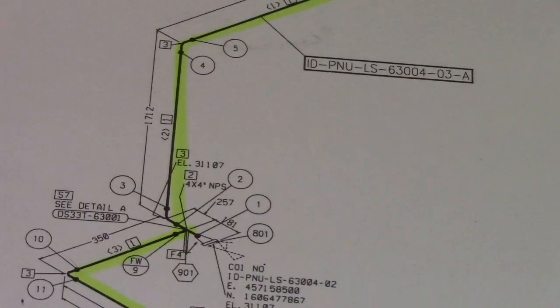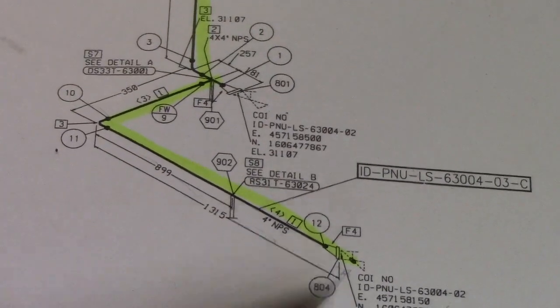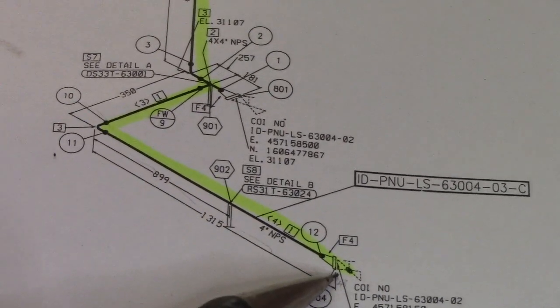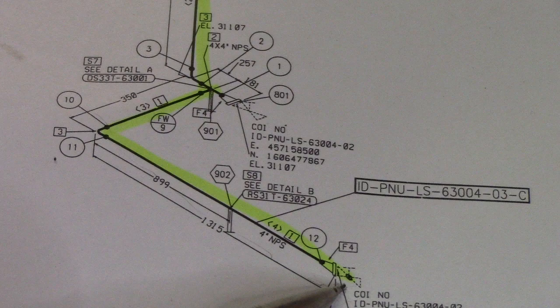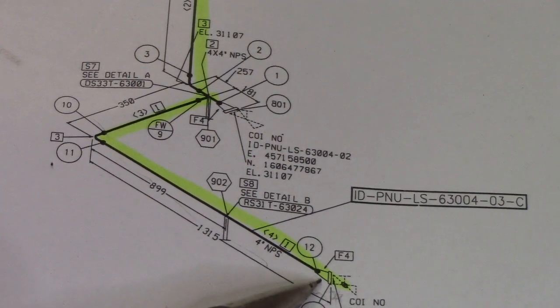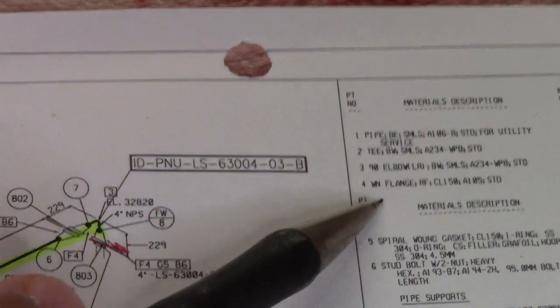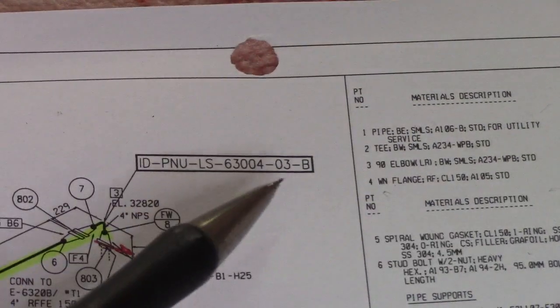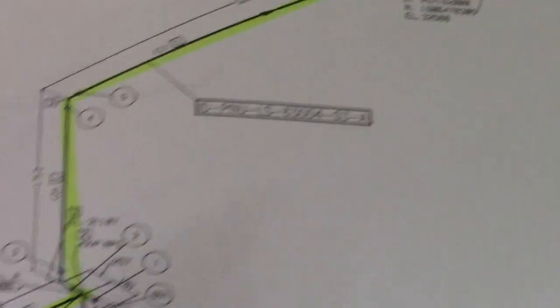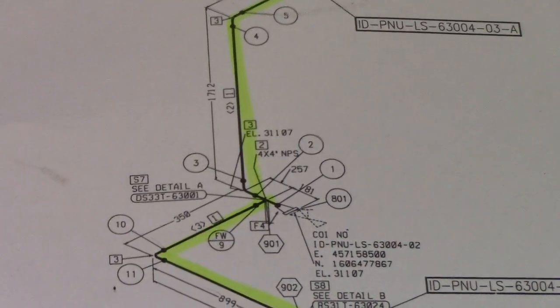Let's start reading the drawing. Here we have a valve — check what type of valve it is in the continuation and also in the material description. Here we have a flange — check F4, which refers to weld neck flange in the material description. Check the size and the material code as well.